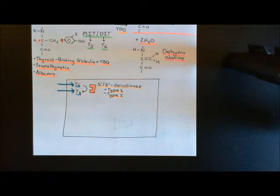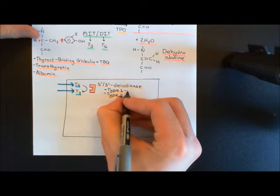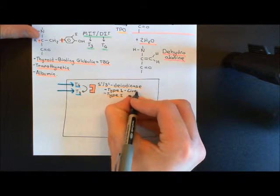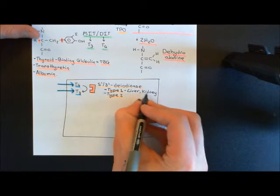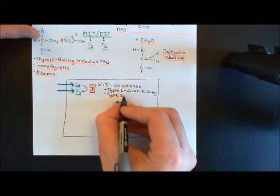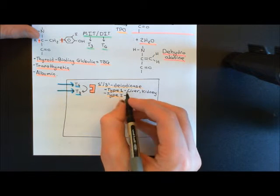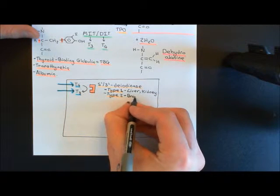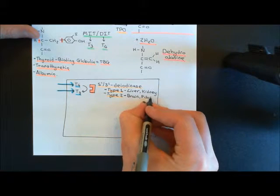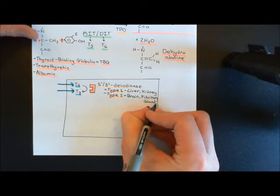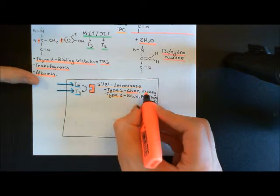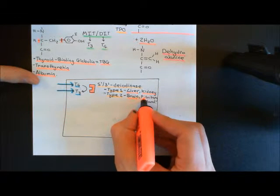There is type 1 5'3' deiodinase, which you find a lot in liver cells and kidney cells. And there is type 2 5'3' deiodinase, which is found a lot in the brain and also, very importantly, in the pituitary gland. We know that the pituitary gland is going to have a role in controlling the release of T3 and T4, so you will see why this distinction is interesting later on — just take it as a fact for now.